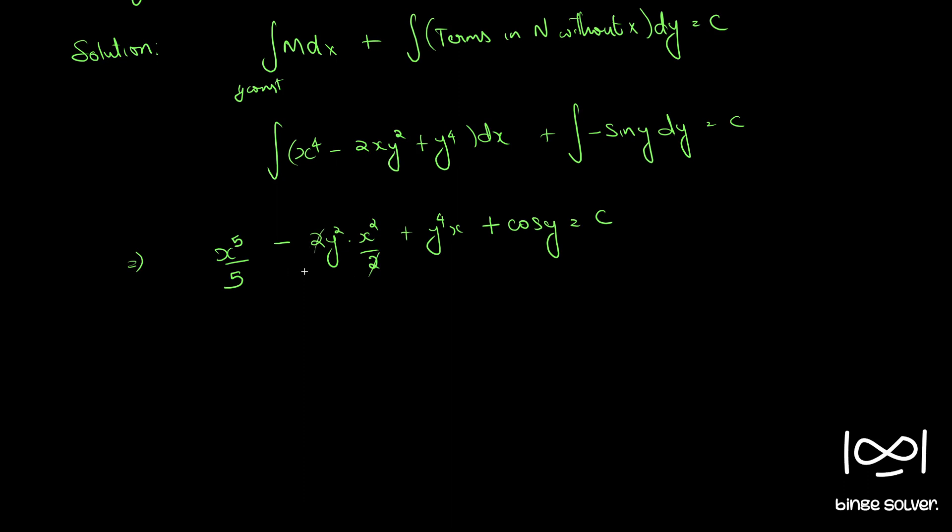The 2 cancels. So x⁵/5 - x²y² + xy⁴ + cos y = C.